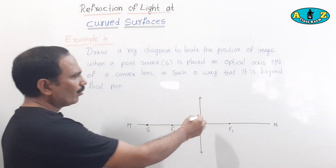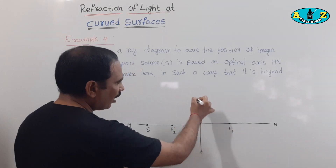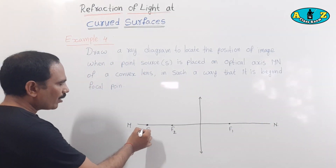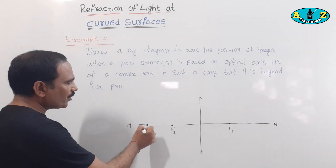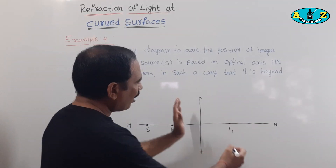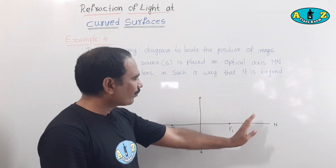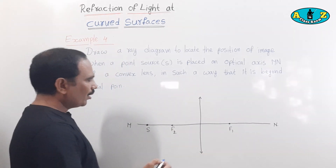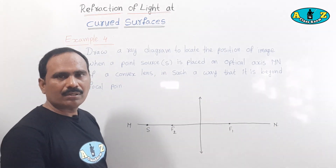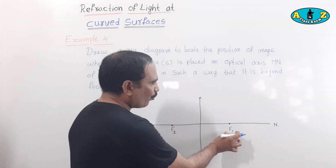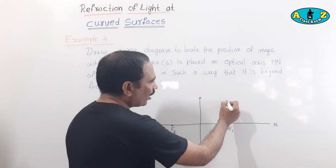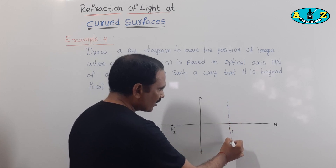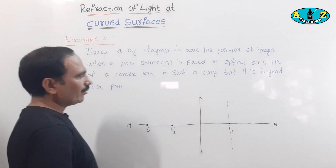Here is the principal axis MN. Draw the convex lens on the principal axis. The pointed source S is placed on the principal axis. This is focal point F1. First, draw a perpendicular line to the focal point F1. This is the perpendicular line.